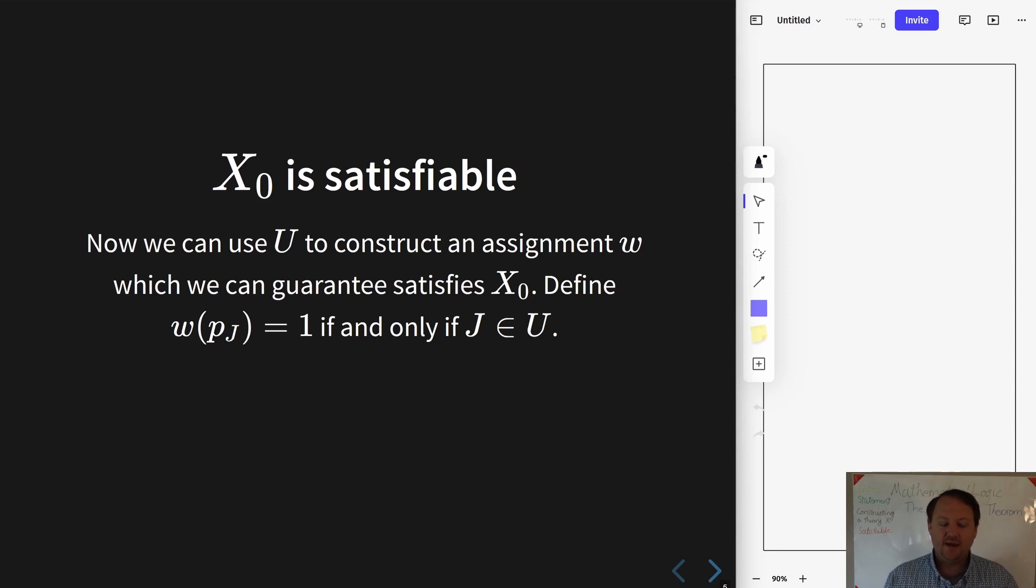So somewhat predictably, we will go ahead and build a model w by saying that it assigns to an atomic formula one if and only if its index, which after all is a subset of I, so the index of the formula is J, J is a subset of I. And so it makes sense to say that our assignment assigns it one if and only if that J is in U, which we had from the previous slide.